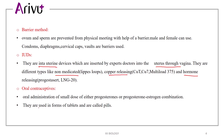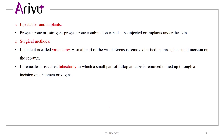Oral contraceptives mainly include tablets which are known as pills. Injectables means injecting hormones — progesterone or estrogen, or a progesterone combination. Surgical methods are vasectomy and tubectomy.